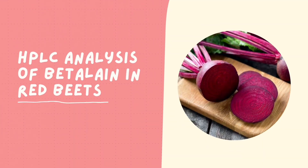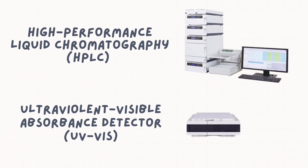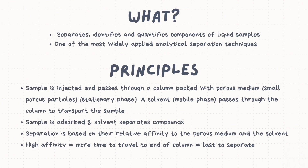In this video, we will be discussing the HPLC analysis of beta-lain pigment in red beets. This analysis uses High Performance Liquid Chromatography, abbreviated as HPLC, along with an ultraviolet-visible absorbance detector, abbreviated UV-VIS. The HPLC equipment separates, identifies, and quantifies components of liquid samples, and is one of the most widely applied analytical separation techniques.